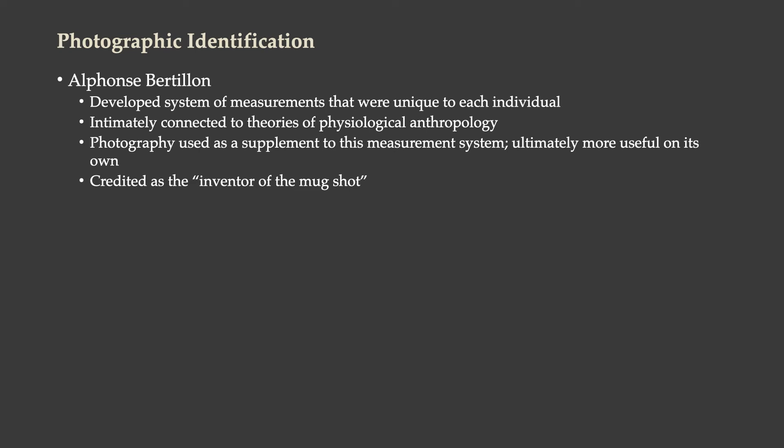Alphonse Bertillon worked more specifically in forensic photography. He developed a system of measurements that would be unique to each individual. His methods were intimately connected to theories of physiological anthropology — ideas he shared with Galton. Bertillon believed photography could supplement this measurement system, capturing information more richly and precisely with less margin of error. Ultimately, those photographs became more useful on their own as identifying documents — not just for the measurements they captured, but as photographs of what a whole face looked like. As a result, Bertillon becomes the inventor of the mugshot.